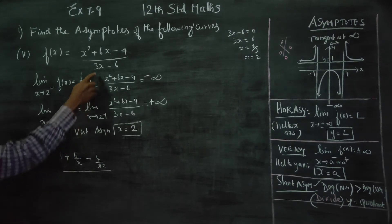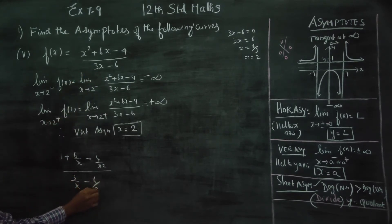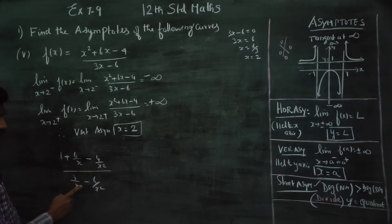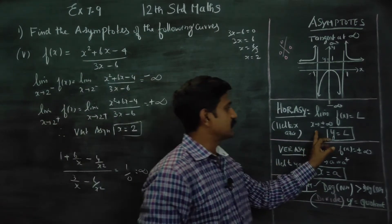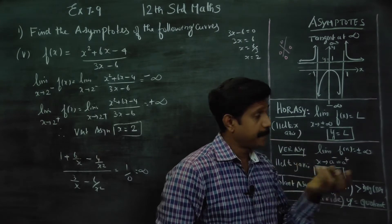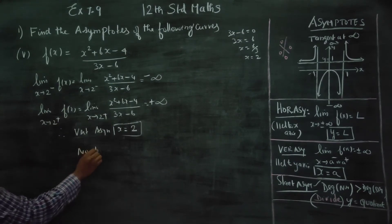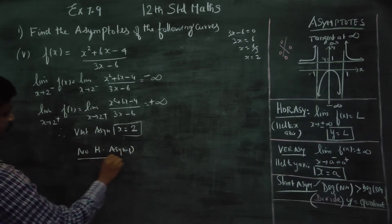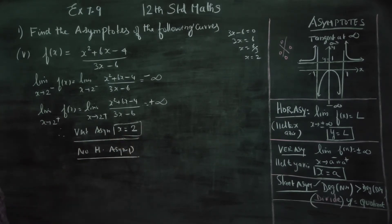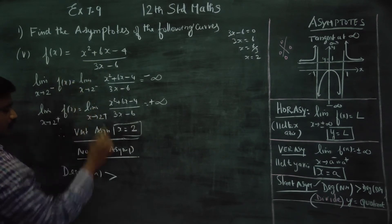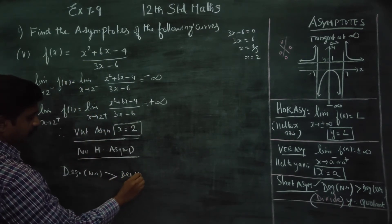When you check the horizontal asymptote, as x approaches plus or minus infinity, the limit becomes infinity. That means there are no horizontal asymptotes, because the degree of the numerator is greater than the degree of the denominator.